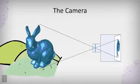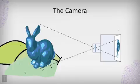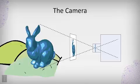In this case, this blue bunny rabbit goes through a focal point and gets projected onto an image plane that would be sensed in modern cameras by a CCD array. We can take that image plane and bring it in front of the camera and we get the exact same image.